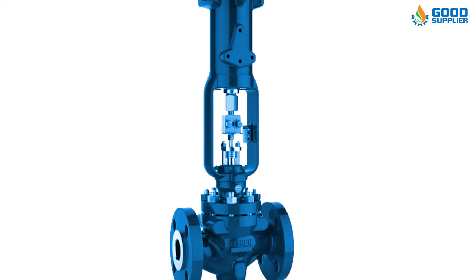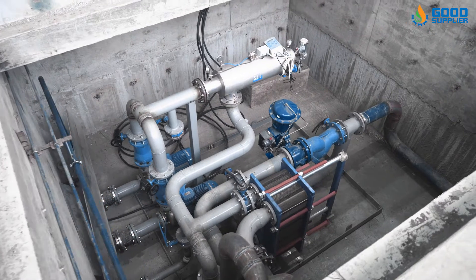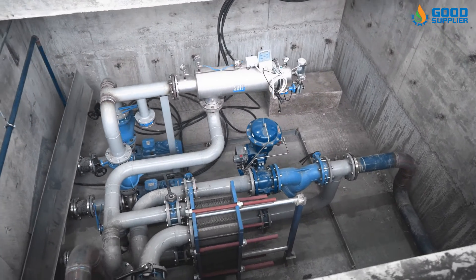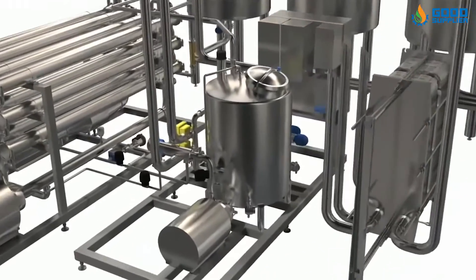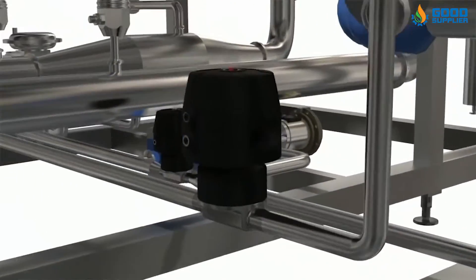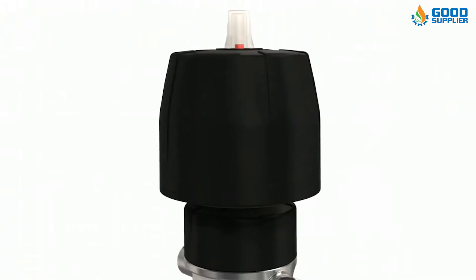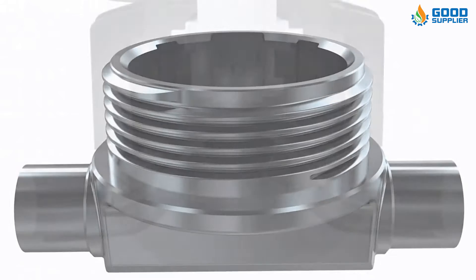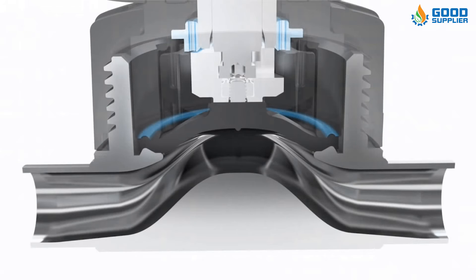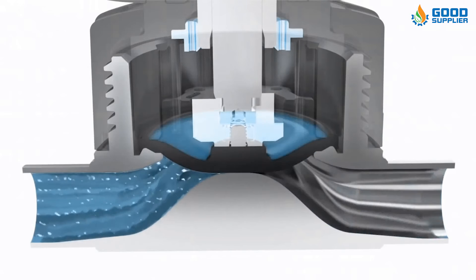The diaphragm isolates the bonnet and valve operator from the fluid being handled. There are two main categories of diaphragm valves. One type seals over a weir or saddle, and the other, sometimes called a full bore or straightaway valve, seals over a seat. The weir or saddle type is the most common in process applications, and the seat type is more commonly used in slurry applications to reduce blocking issues, but also exists as a process valve.